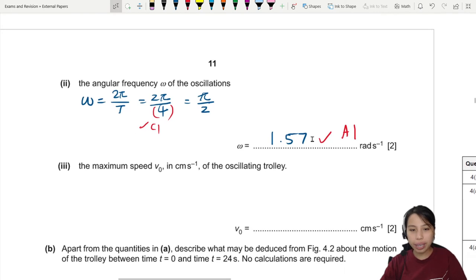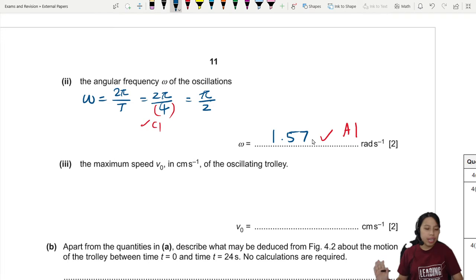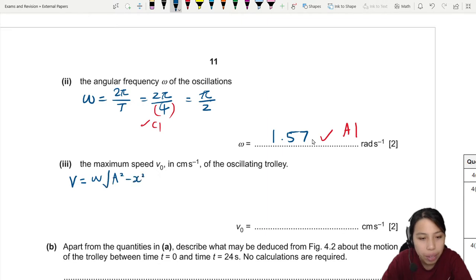Maximum speed is what we need to find next. The maximum speed in cm of the oscillating trolley. So if you don't remember any equation, you stay calm first. At the first page of every partial question, there is this velocity equation for simple harmonic motion. So go scroll to the first page and you will see it there. It's like this: v equals omega times square root of a squared minus x squared. This one is written there. Every partial question also have this equation.